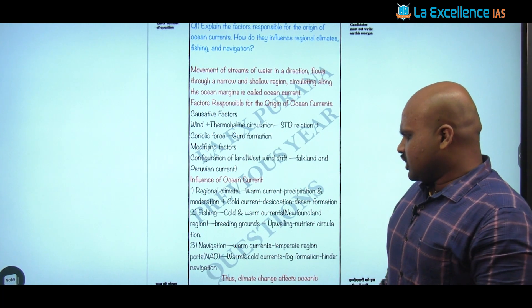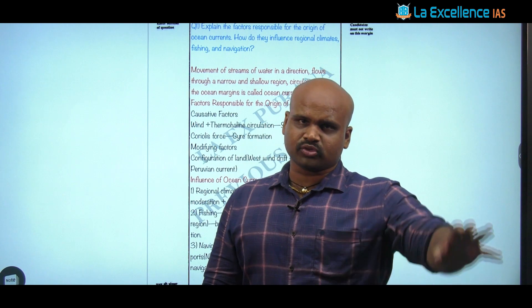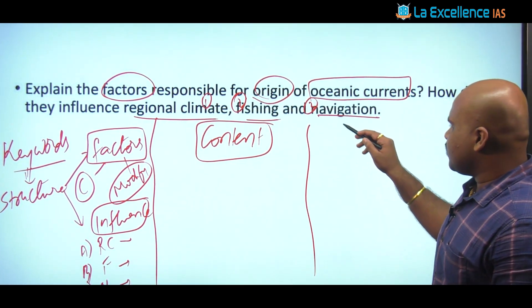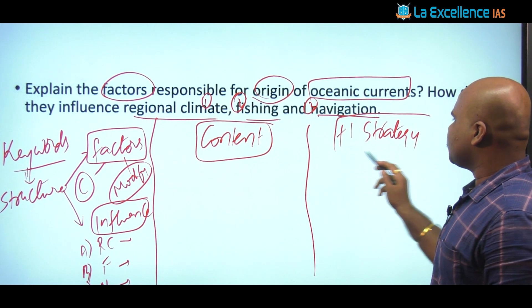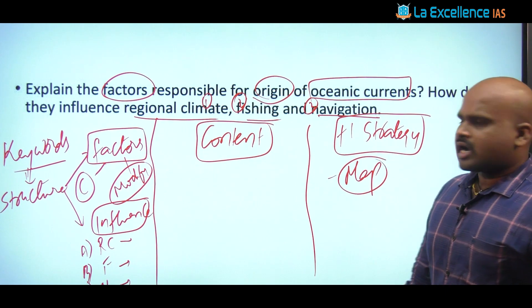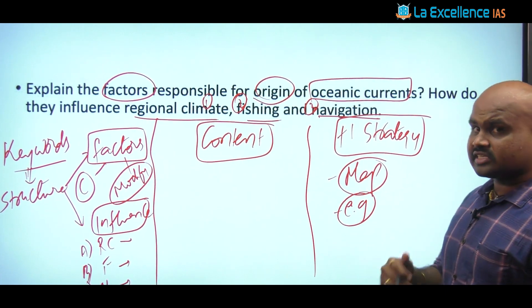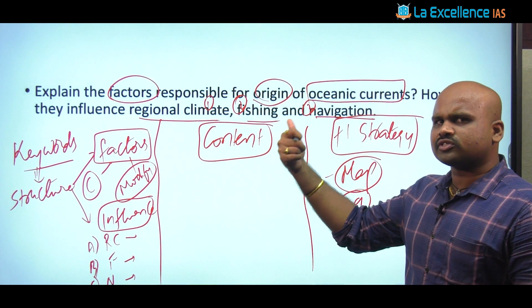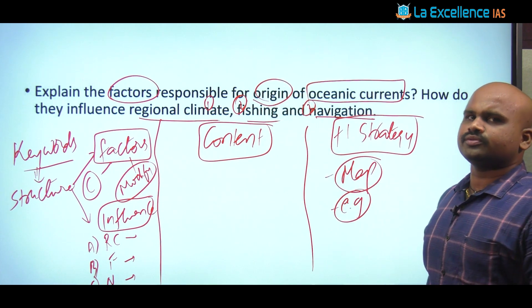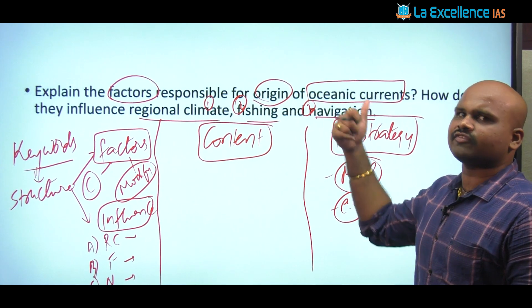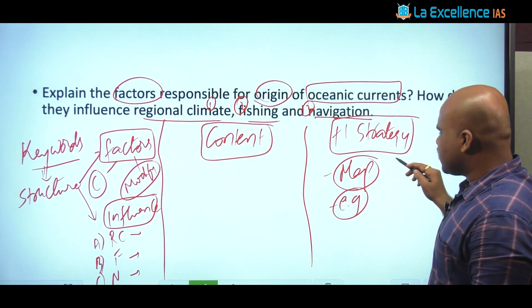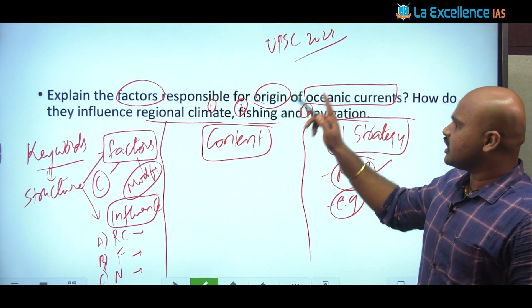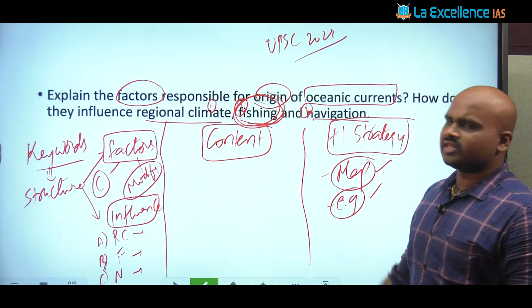Once we discuss the influence, we can conclude that with climate change there are also changing phenomena with respect to these oceanic currents and their corresponding impact. The plus-one strategy for this question is mapping, and certainly the various examples that substantiate regional influence — for fishing, we must mention Newfoundland, Kuroshio and Oyashio; for navigation, the North Atlantic Drift. This question was repeated in UPSC Mains 2022, but they asked only about the influence on fishing, not the other dimensions.